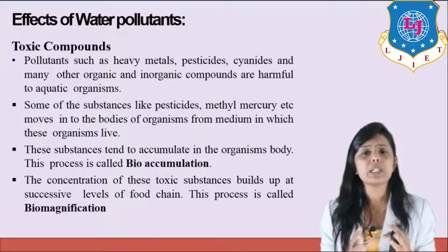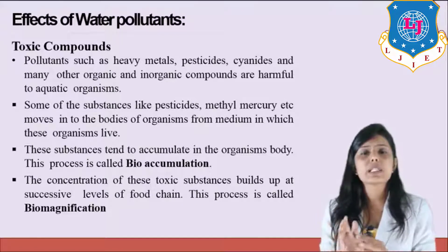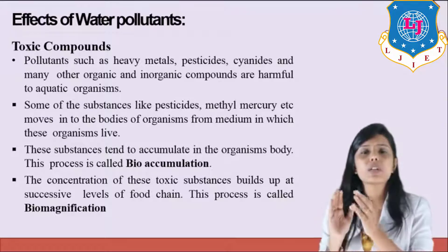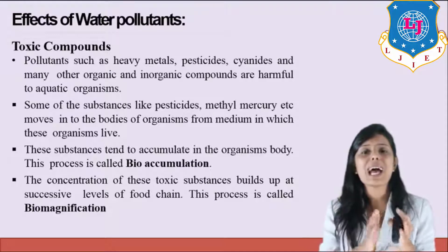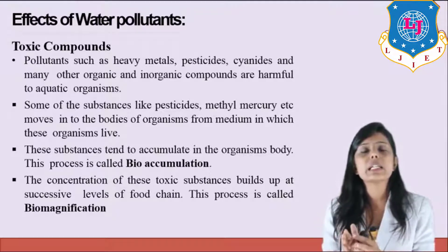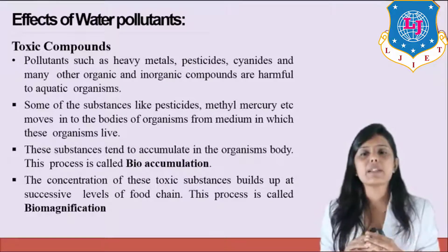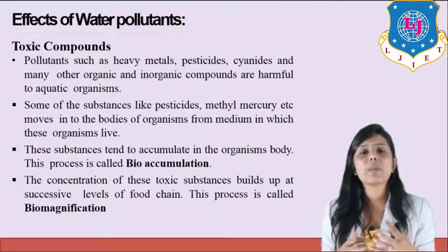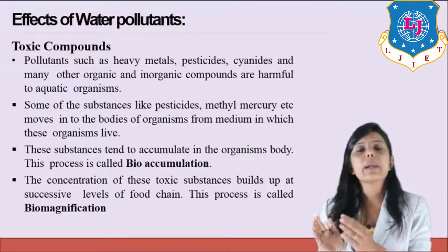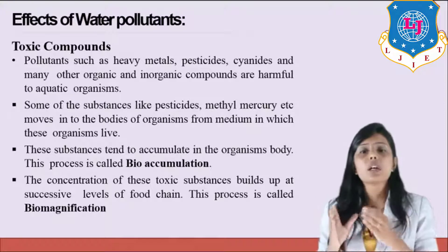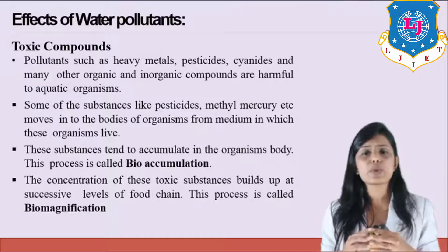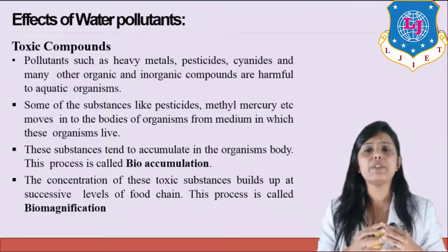When a toxic compound is passed from one living organism to another in the food chain, its concentration increases because small organisms are eaten by larger organisms. As the toxic compound moves from small to large organisms, the concentration of toxicity increases. This is known as biomagnification — when the concentration of toxic substances builds up at successive levels of the food chain.